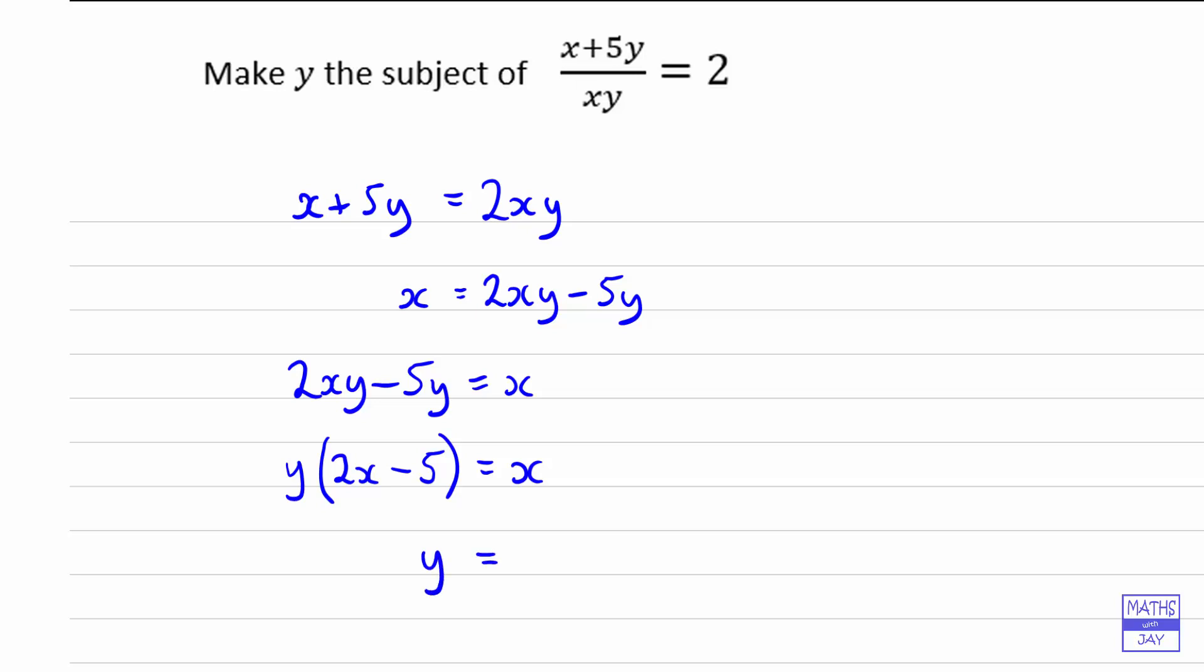do is to divide by 2x minus 5. So we've got y is x divided by 2x minus 5.